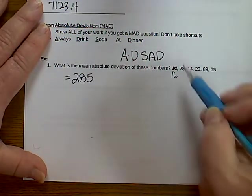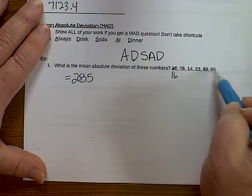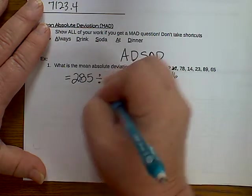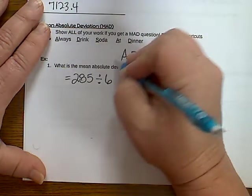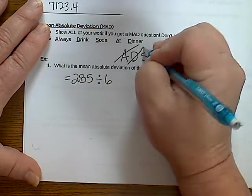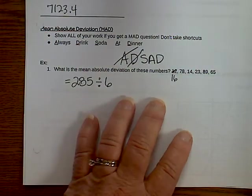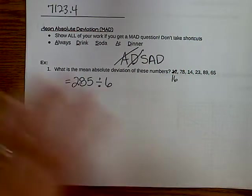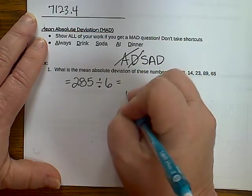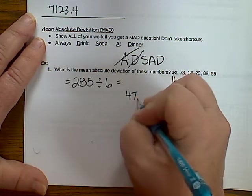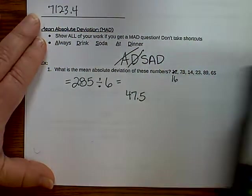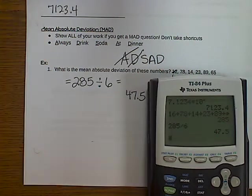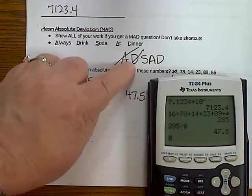And I have how many numbers? 1, 2, 3, 4, 5, 6. So I'm going to divide that number by 6. So I've added, and now I'm dividing, and I'm marking them off as I do it. 285 divided by 6. And I get 47.5. I'm going to show you that here in a sec. Hopefully you're doing it with me. Now, we've added, we've divided.